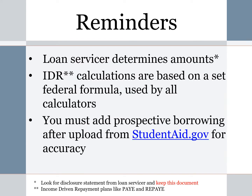A few reminders before we look at the individual calculators. Your loan servicer is going to determine the actual repayment amount under any repayment plan you choose — the calculators are simply helping you get an estimate. Income-driven repayment plan calculations are based on a set federal formula used by all loan servicers and all calculators, so you should not get a significantly different number from your loan servicer as long as they use the same income and family size information you're using. Also, many calculators let you upload your current federal debt directly from studentaid.gov, but if you plan to do additional borrowing, be sure to add your prospective borrowing to the calculator after uploading so you get a more accurate estimate.